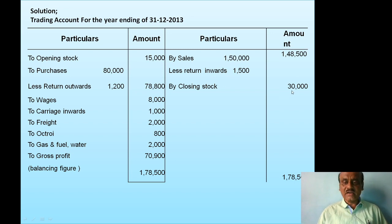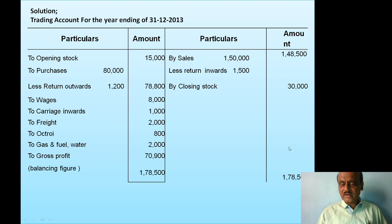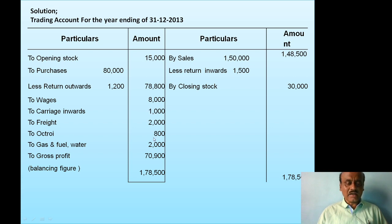Closing stock goes on the credit side. Now regarding salary — salary belongs to the profit and loss account, not the trading account, so we do not include it here. These are all the direct expenses. The credit side total is 1,48,500 plus 30,000 equals 1,78,500. The debit side total gives a difference amount of 70,900, which is the gross profit. So the trading account items are: opening stock, purchases less purchase returns, wages, carriage inwards, freight, gas and fuel — and on the credit side: sales less sales returns, closing stock, and gross profit of 70,900.